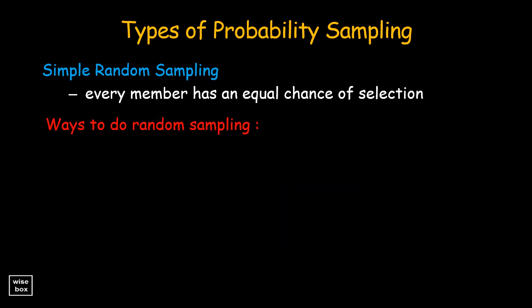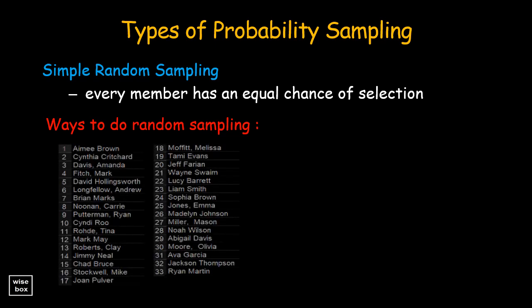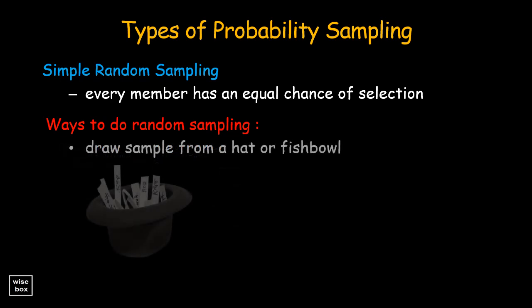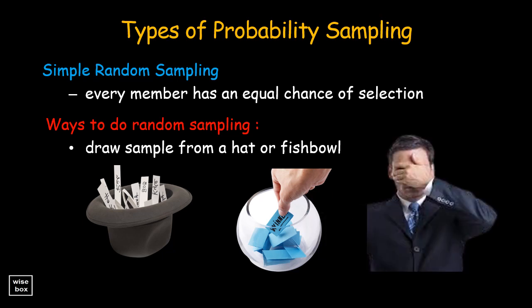To do random sampling properly, here are some ways to do it. One is to list all possibilities on paper, cut them up, and then draw a sample from a hat or fishbowl. Remember, you can't look at the pieces of paper when drawing the sample.